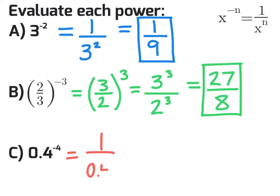The negative sign means that we put it as a reciprocal, 1 over 4 tenths to the power of negative 4, and that equals 39.0625.